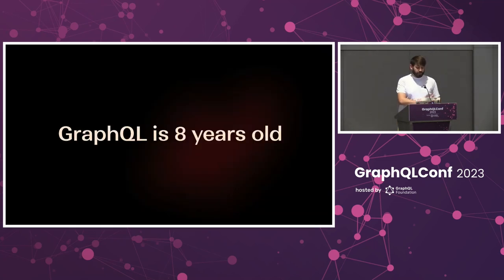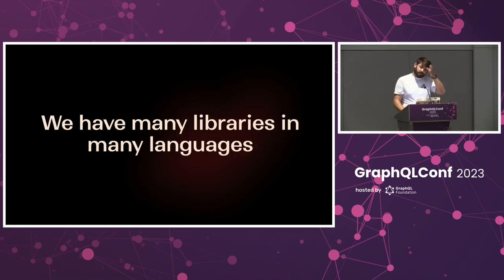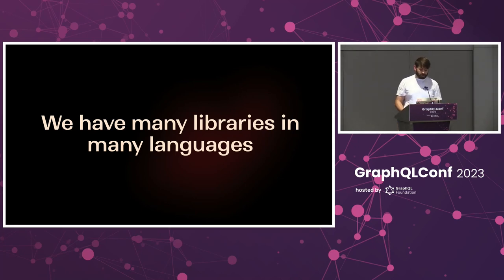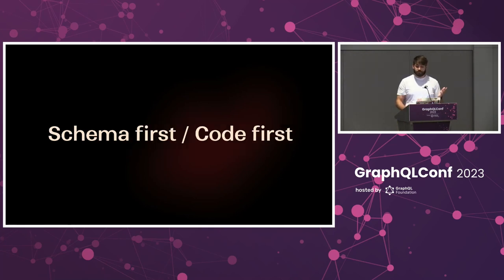To set the stage, GraphQL has been around for about eight years now. Over those eight years, we've seen a lot of libraries and a lot of different languages being able to create GraphQL APIs. Today we're going to use Python instead of the more common JavaScript. But even with so many libraries, we can categorize them into two approaches: Schema First and Code First.